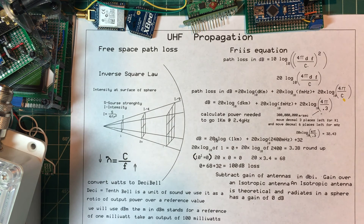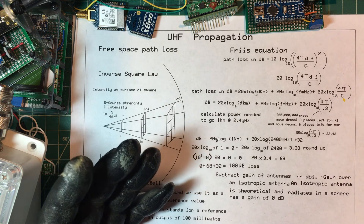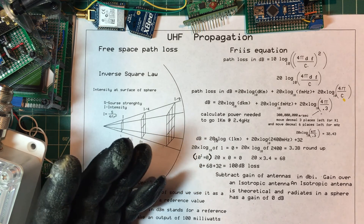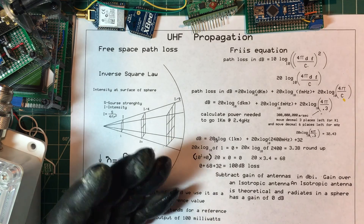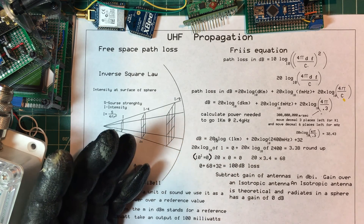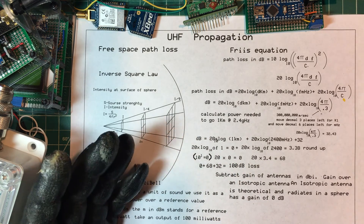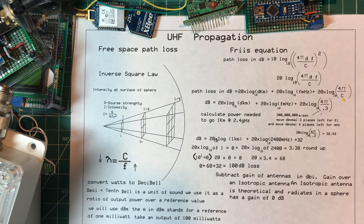Let's drop down to 900 MHz — call it 1000 MHz for easy math since I don't have a calculator. Log base 10 of 1000 is 3, times 20 is 60. Adding 60 plus 6 plus 32 gives 98 dB loss. Starting with 20 dBm, our RSSI is minus 78 dBm. So going from 2.4 GHz down to 1 GHz and doubling our distance, we actually gained 2 dB — not bad.